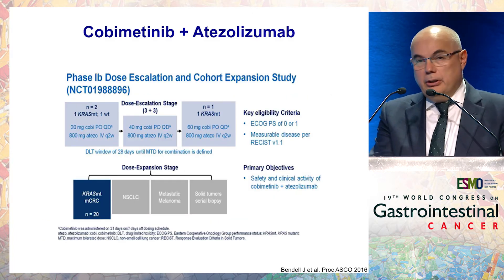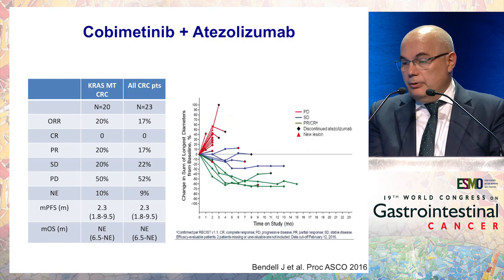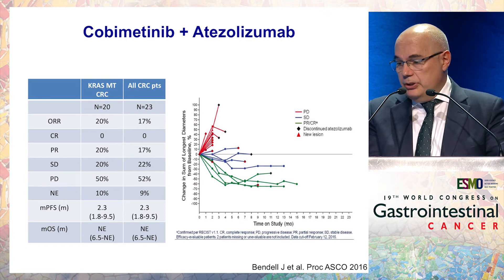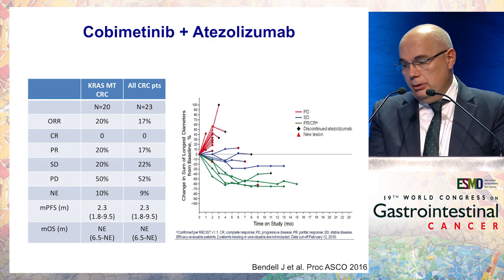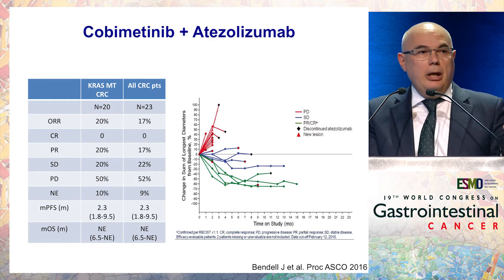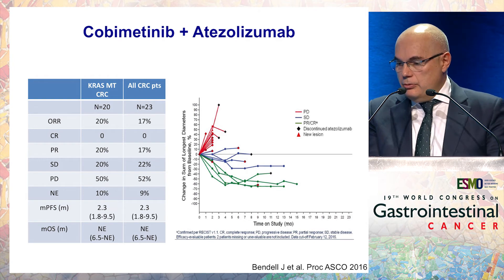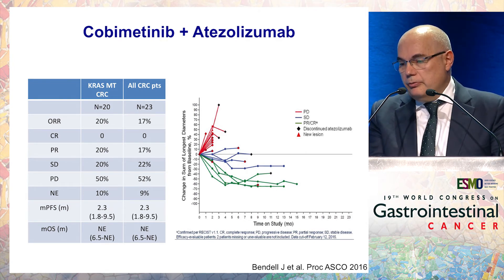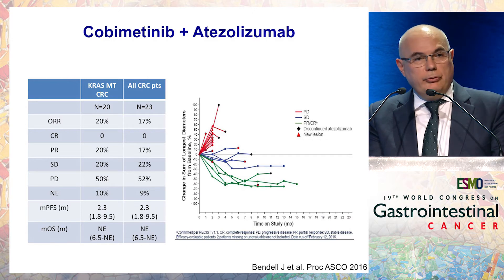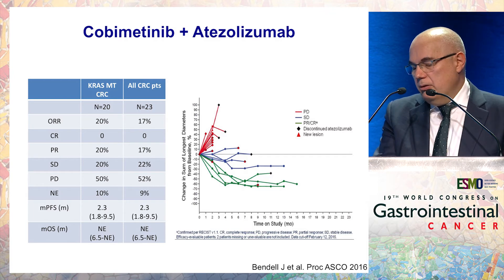This was translated into the clinic — Johanna Bendell presented data showing that for colorectal cancer MSS tumors, where you would not expect any activity for a MEK inhibitor or PD-L1 inhibitor, approximately 20% of patients achieved a partial response and an additional 20% achieved stable disease. This is something we would not expect with either agent alone.